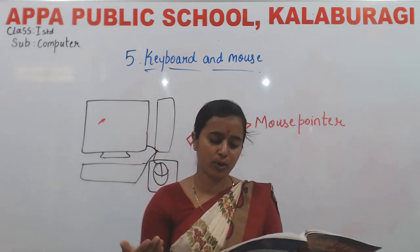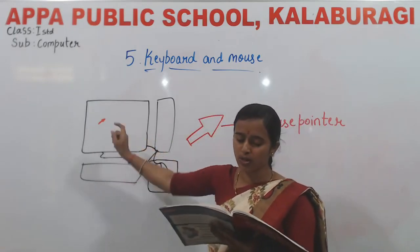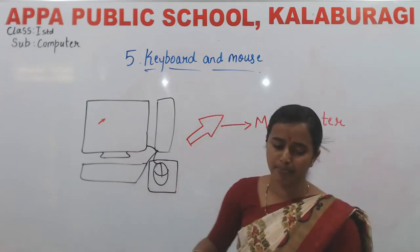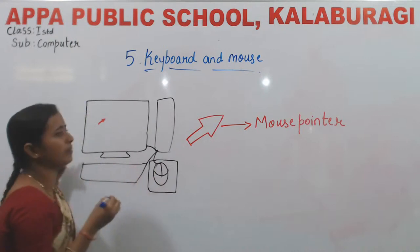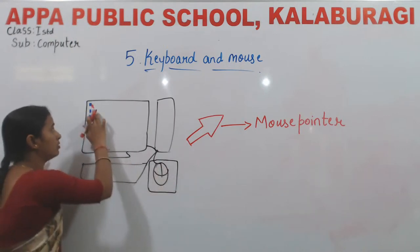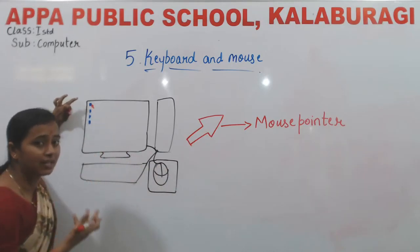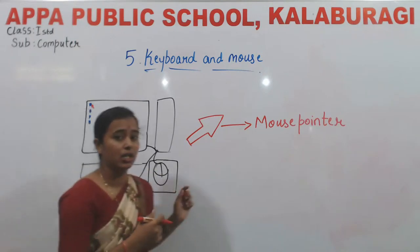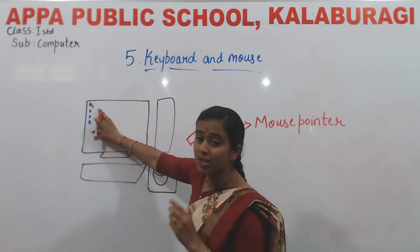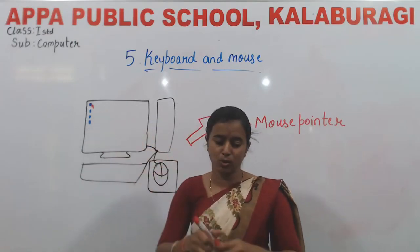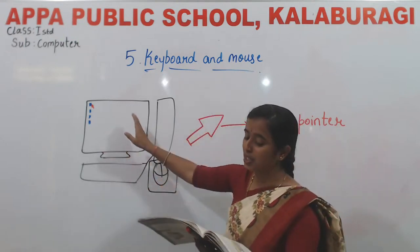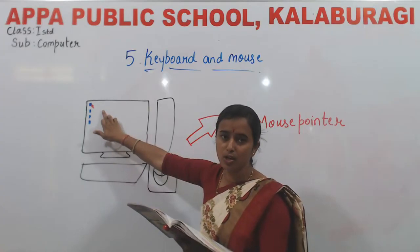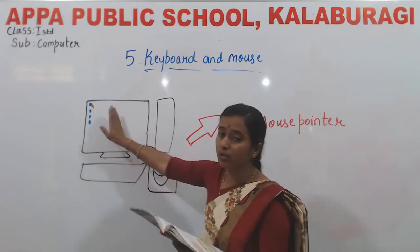This arrow is called the mouse pointer. This arrow helps us understand what the mouse is pointing at. For example, on the screen there will be many icons. When we move the mouse pointer, it shows which icon we are selecting — where we are on the monitor screen and what we are exactly selecting.